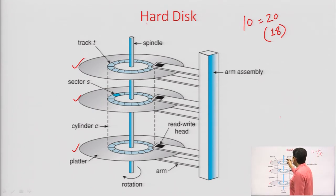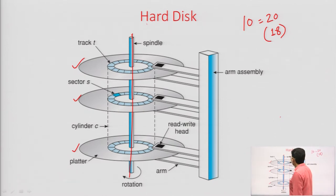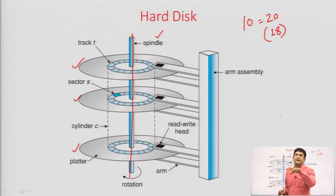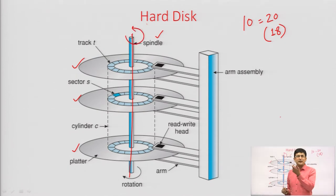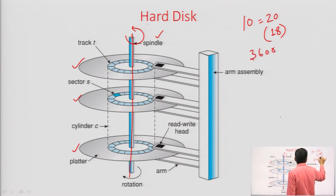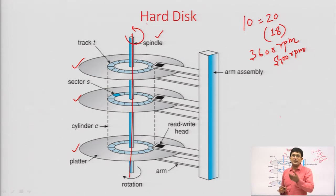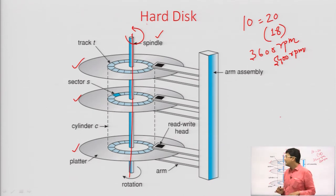The hard disk platters are connected to a cylindrical structure known as the spindle. The spindle is the shaft on which all the platters are arranged and fixed. This spindle moves continuously, and the usual speed of the spindle is 3600 revolutions per minute or 5400 revolutions per minute. Obviously, when the spindle moves, the platters will also move. So the platters are in continuous movement whenever we are dealing with a system.